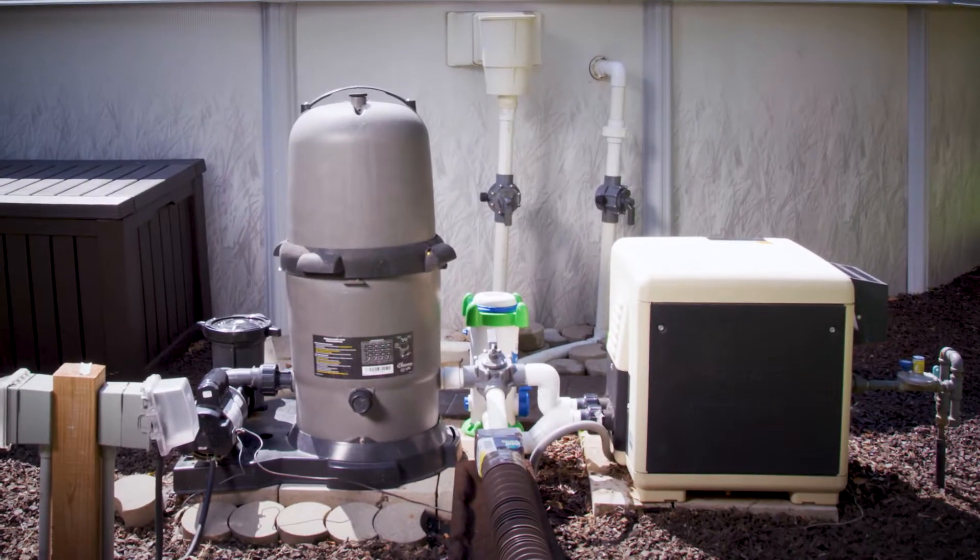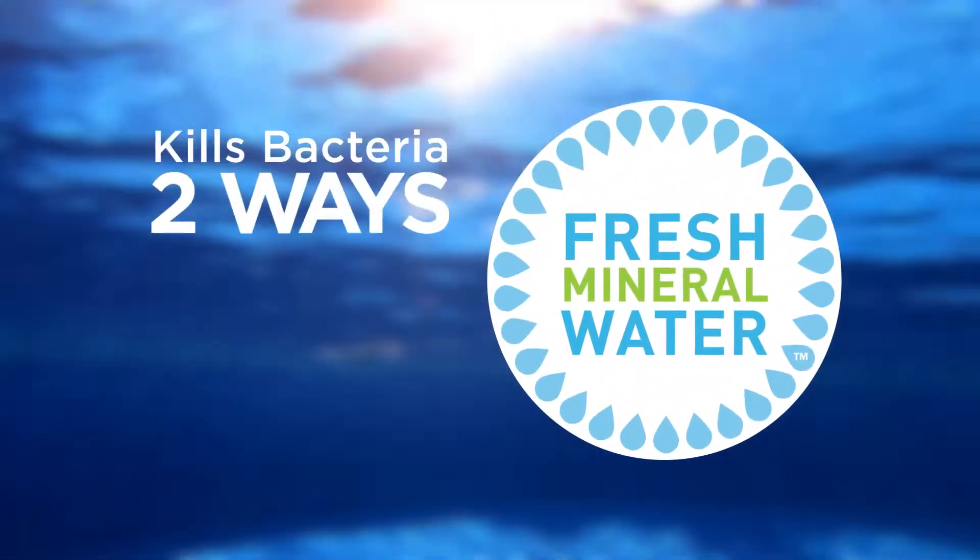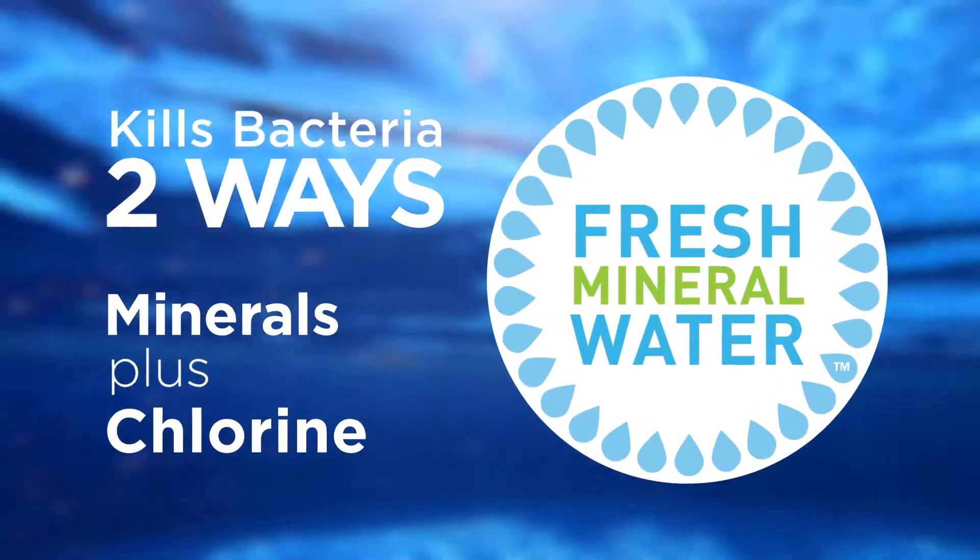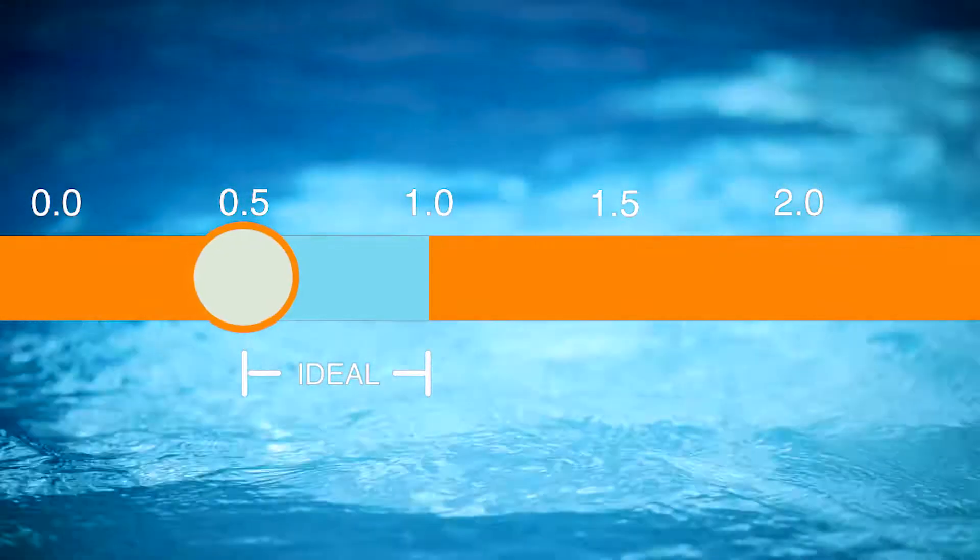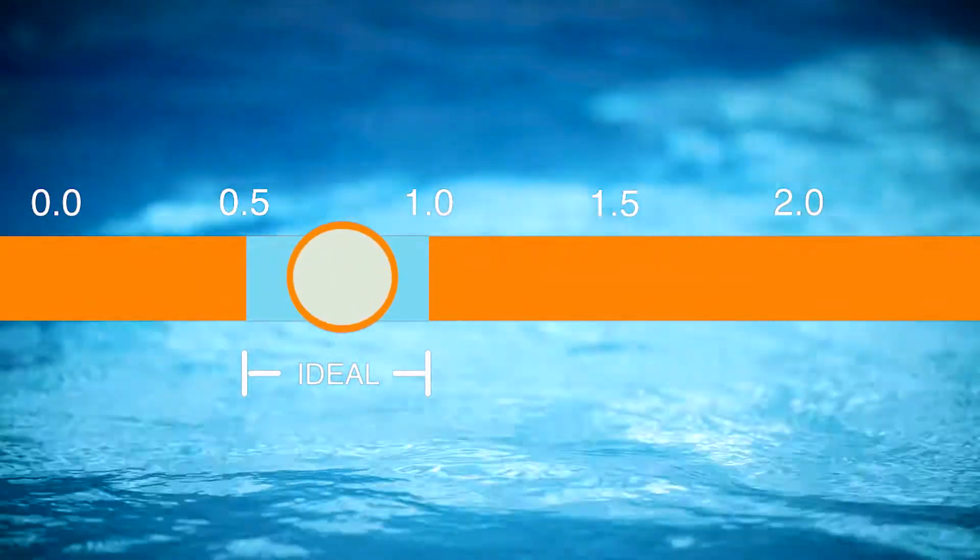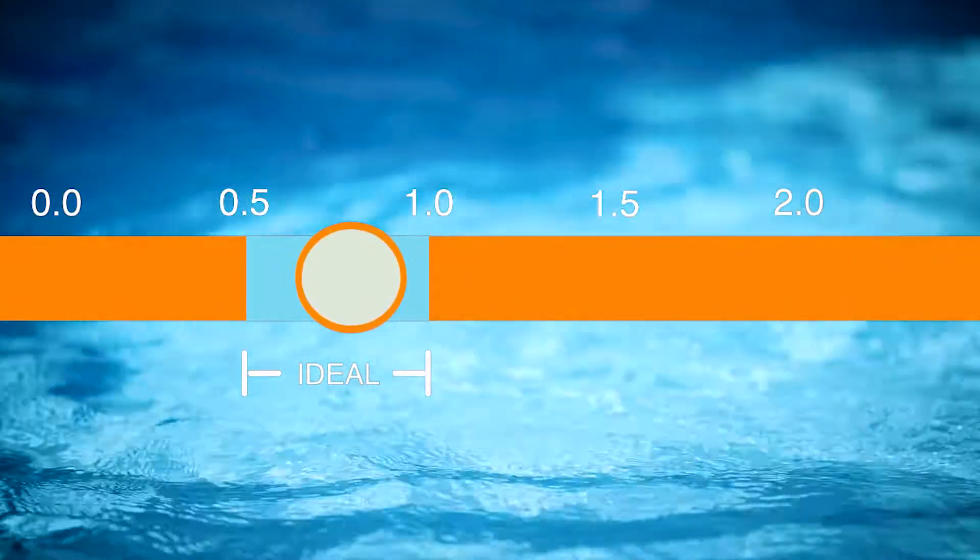The beauty of the FROG system is that it creates fresh mineral water which kills bacteria two ways with a special blend of minerals and a very low level of chlorine. In fact, to enjoy all the FROG benefits, the chlorine level should stay within 0.5 and 1.0 parts per million. If it's higher than that, there are a few simple adjustments you can try.